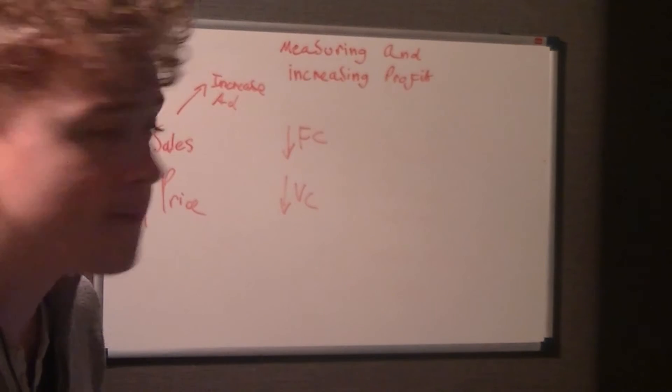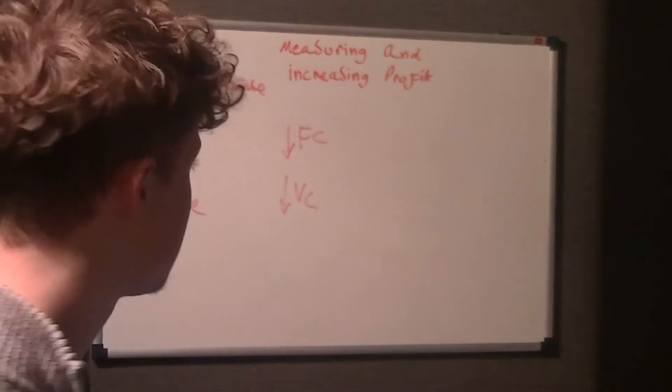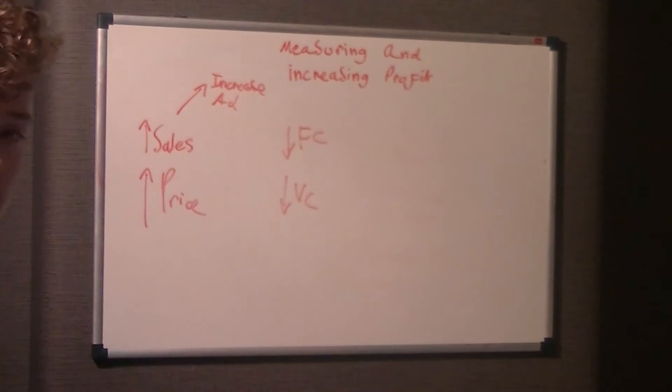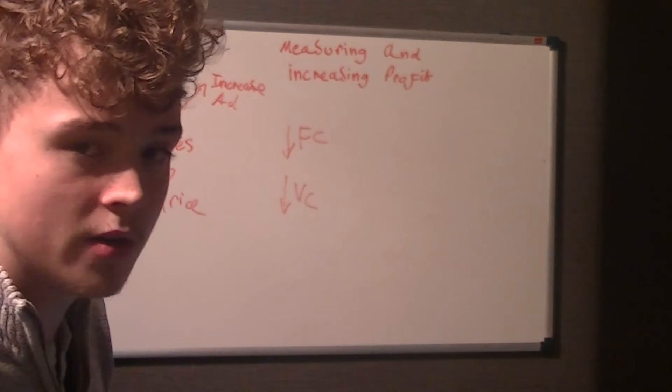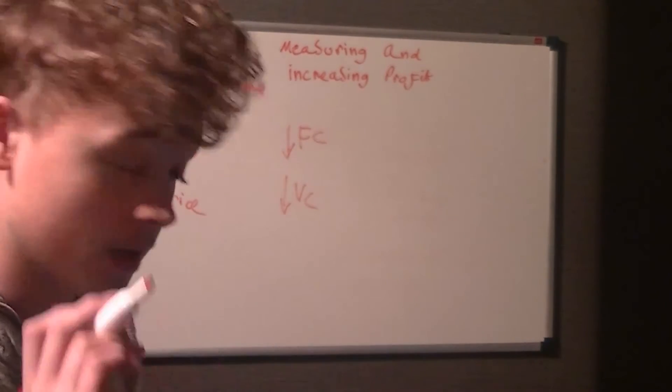So fixed costs would be reducing the rent. If you're on salaries, reduce the salaries of the workers. In variable costs, you could reduce the wages of the workers or the raw materials. But obviously both of them have implications on the sales and profit margins.